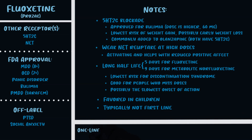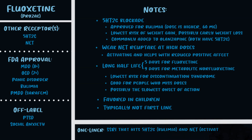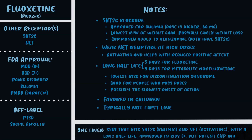To summarize Prozac: it's an SSRI that hits 5-HT2C, helping remember it's approved for bulimia. It has NET blockade making it a little activating, a long half-life, and is approved in kids eight and older. The downside is potent CYP inhibition.